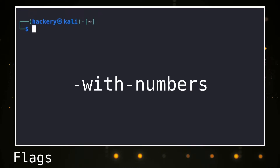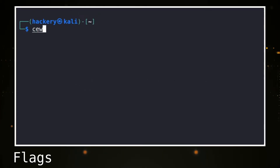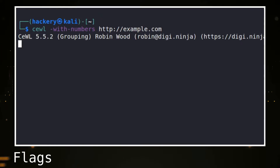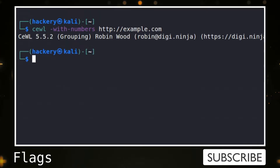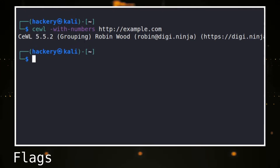The --with-numbers flag enables collection of words that contain numbers. This means that numbers are also counted as letters and are recorded by CeWL. For example, when running CeWL with the default settings, a word such as SE3 would not be recognized as a word without the --with-numbers flag.